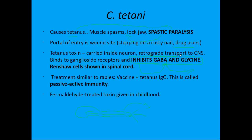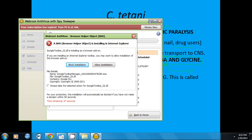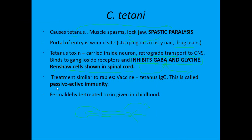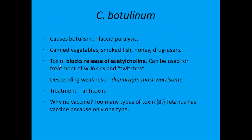Renshaw cells are found in the spinal cord — low yield, but they might ask what cells are affected. Treatment of tetanus involves passive-active immunity: you give both a vaccine and immunoglobulin against tetanus. This is similar to rabies treatment, and there is a vaccine available.